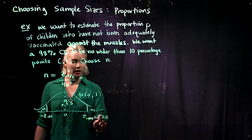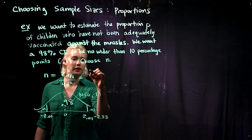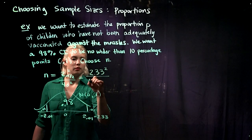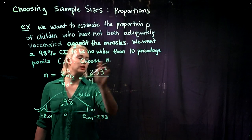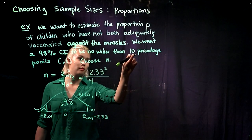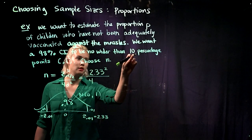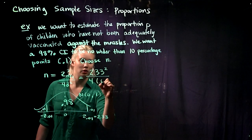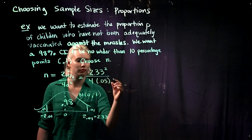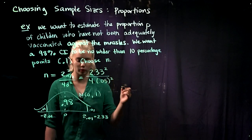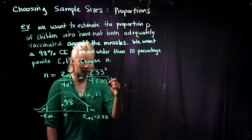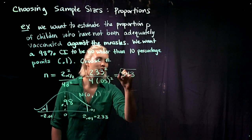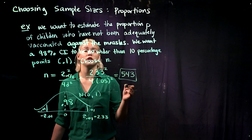We have 2.33, we can fill that in. And we know that d is equal to 5 percentage points, in other words .05. And then we need to square that distance. So if we crunch all those numbers, then we need to use a sample size of at least 543 children.